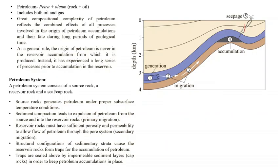Petroleum is petra plus oleum, that is rock plus oil, and it includes both oil and gas — petroleum exists in liquid form as well as gaseous form. So we shall normally refer to petroleum as hydrocarbon.